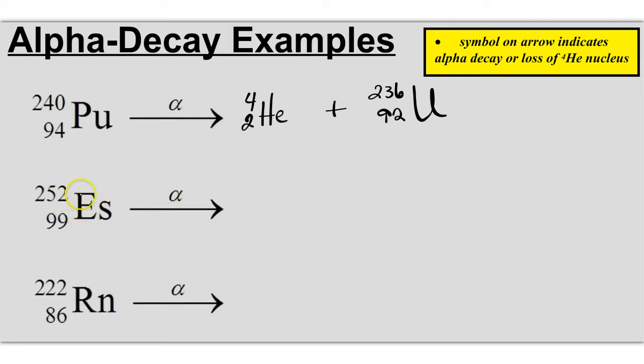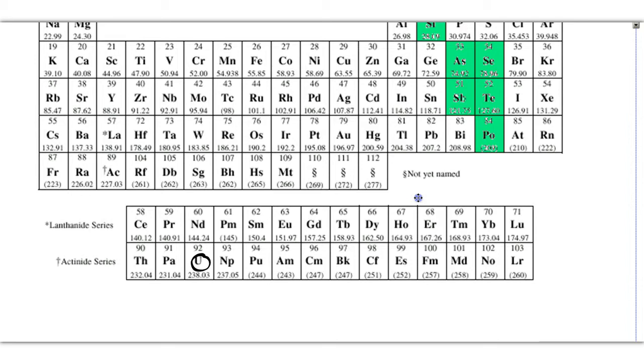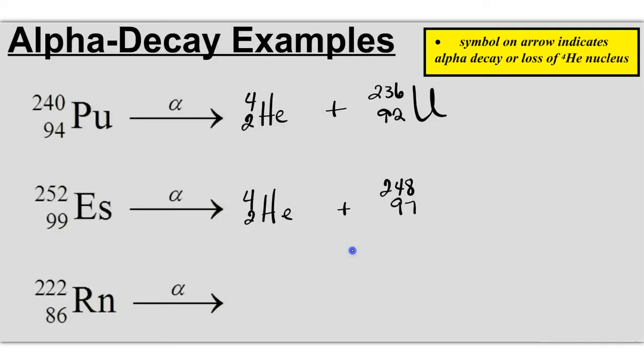The next one is 252 over 99 einsteinium. It's going through alpha decay, so we're going to emit an alpha particle. And 252 minus 4 is going to equal 248. 99 minus 2 is going to equal 97. We look on the periodic table for element number 97, and we find it's BK, which is berkelium.